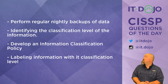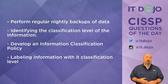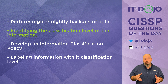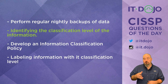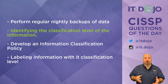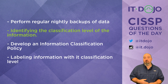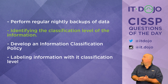Answer choice number two says that the information owner is going to be responsible for the information classification. That is absolutely correct. Whoever the information owner is — either a senior person within the organization or the manager in the line of business — they're the one who defines what the classification level is of the information to which they are the owner. That's one of their jobs.